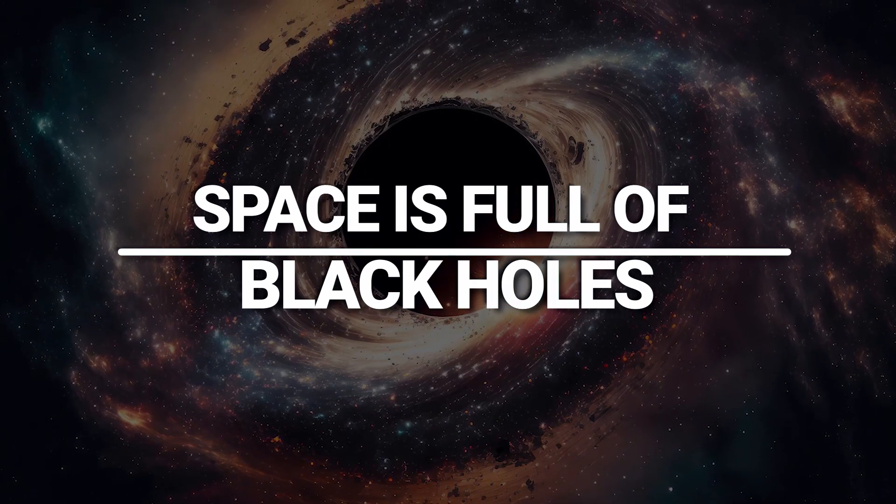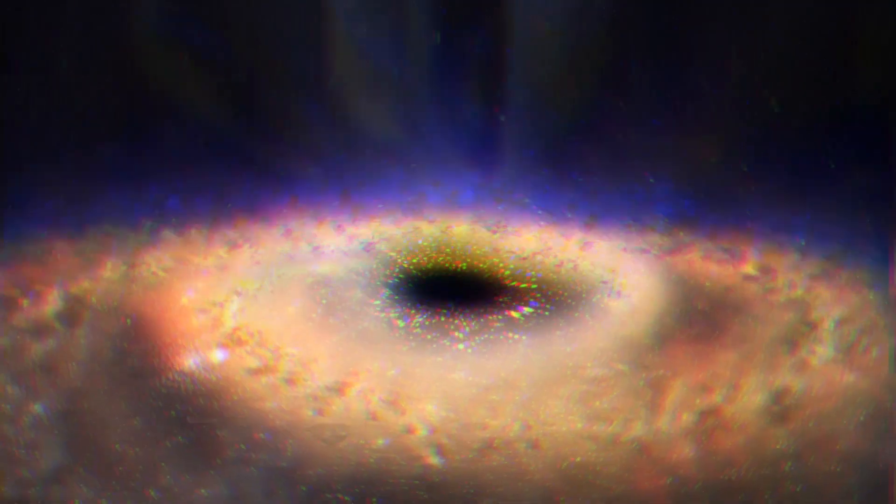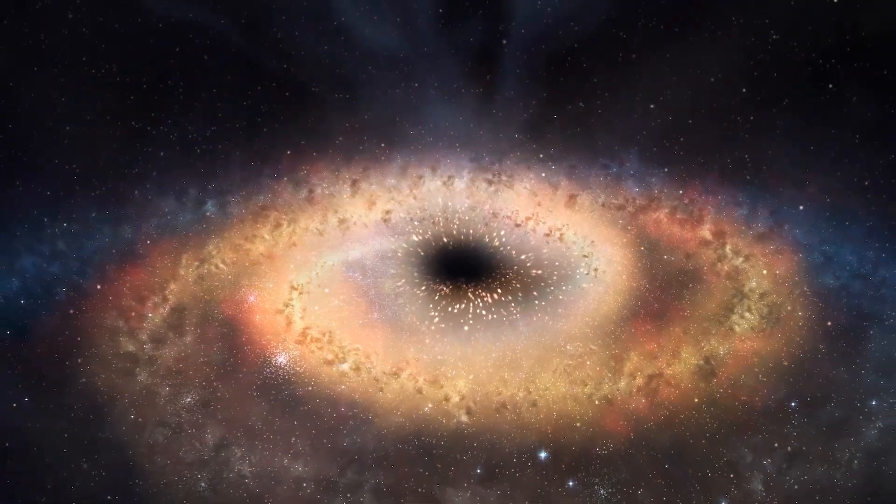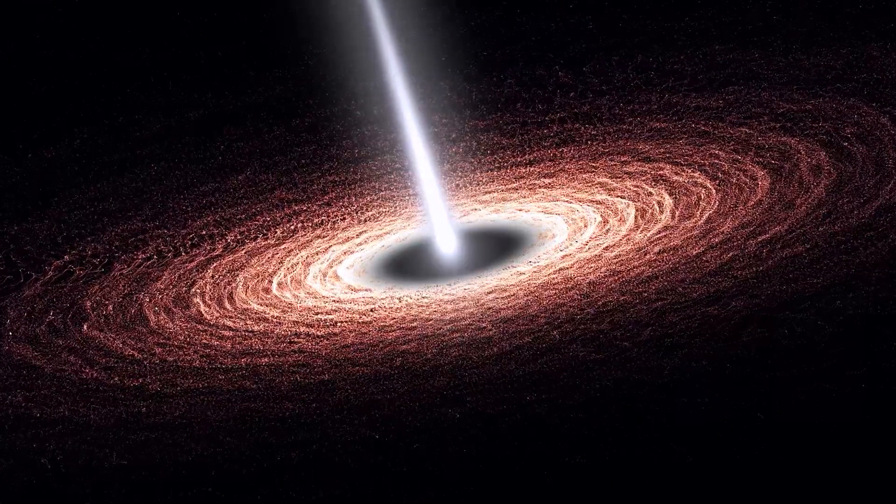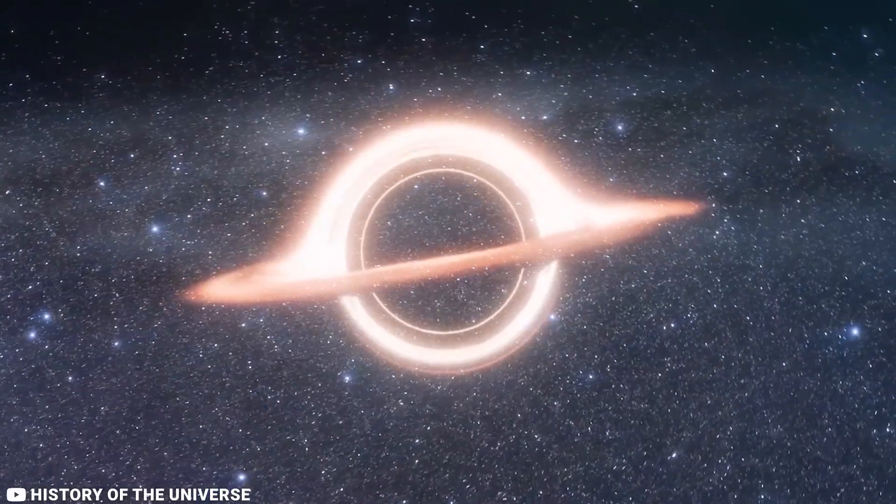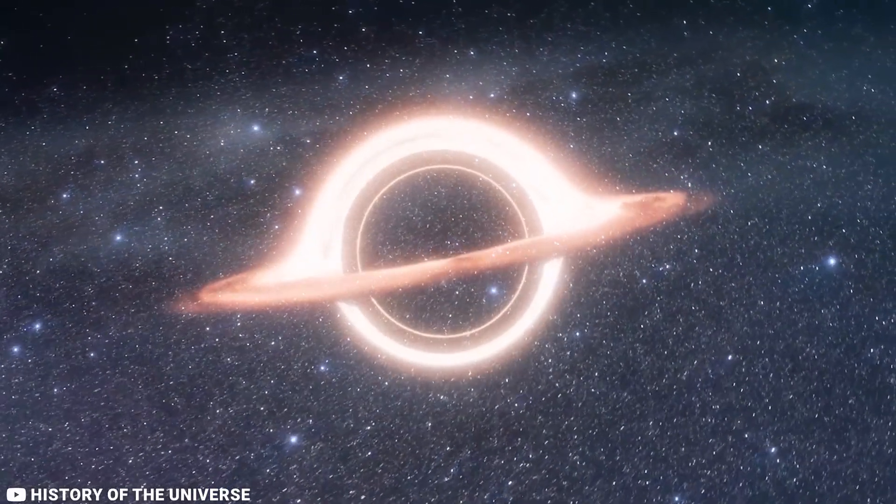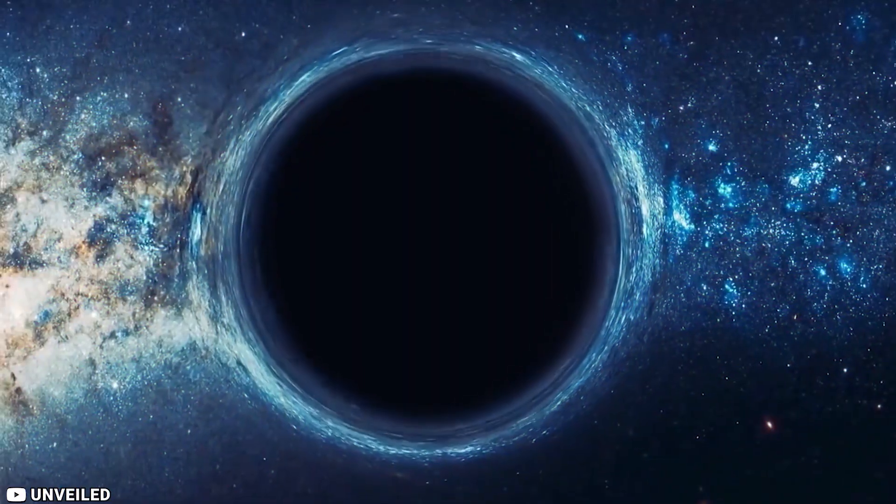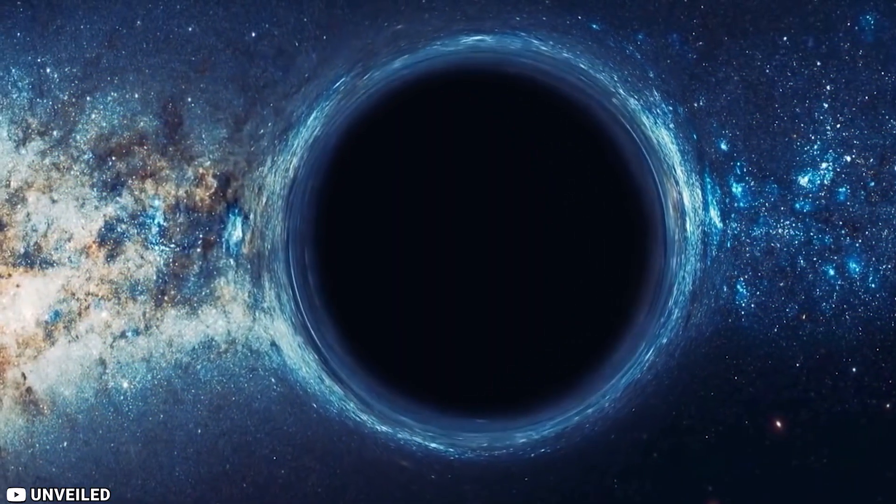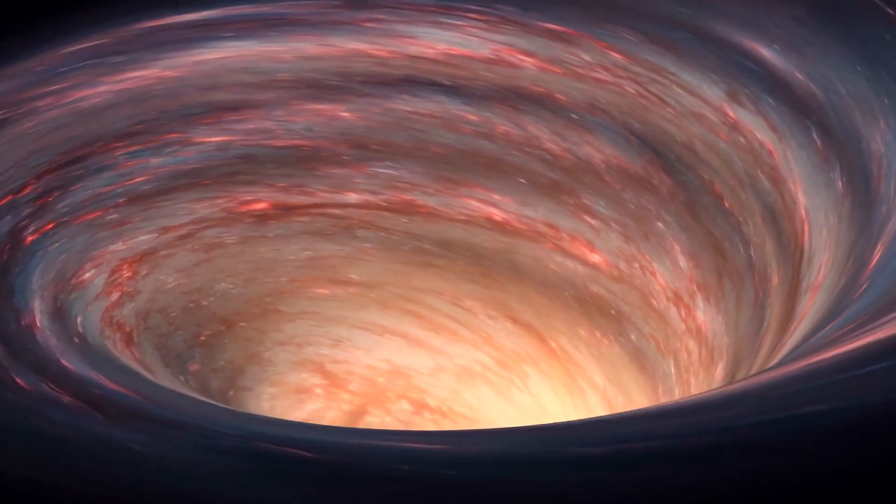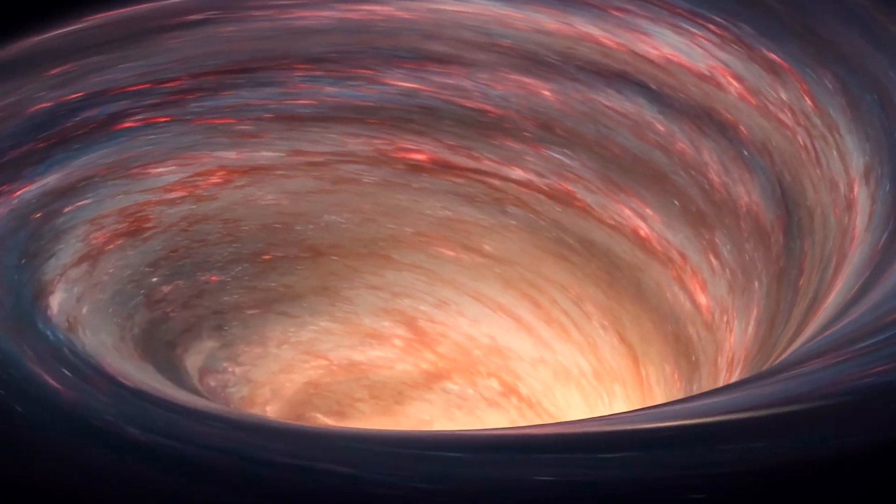Space is full of black holes. A black hole is a region of space where gravity is so strong that nothing, not even light, can escape. Black holes are formed when massive stars collapse at the end of their lives. The more massive the star, the larger the black hole. Black holes are invisible, but we can detect them by their effects on the matter around them.